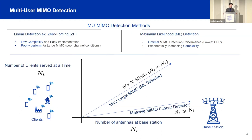In massive MIMO, channel conditions become favorable, so we can use simple linear detectors to get very high performance. But this means there are large performance gains still to be achieved, and this remains an open challenge in multi-user MIMO systems because of the high complexity of the ML detector.